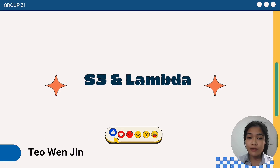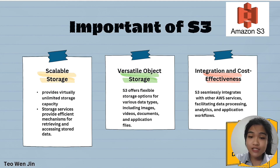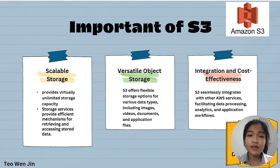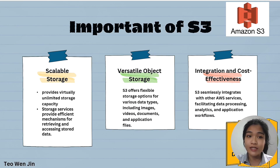Next, we will talk about AWS S3 and Lambda. AWS S3 is the storage service in our system. It is an object storage service, storing objects in user-created containers called buckets. It can store various types of data. The reason we chose S3 is because it has scalable storage, versatile object storage, and also integration and cost effectiveness. S3 provides commercially unlimited storage capacity and allows the system to scale significantly as data volumes grow. It also enables system components to quickly retrieve relevant data for processing, analysis, and presentation, and can store files such as images, videos, and documents.